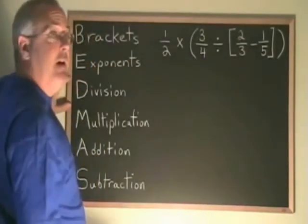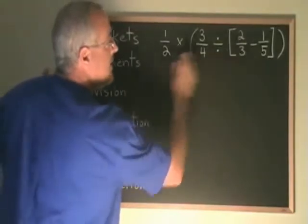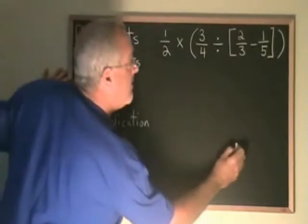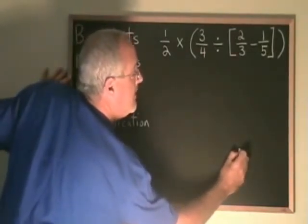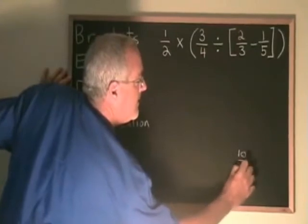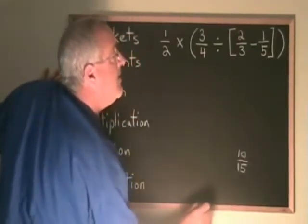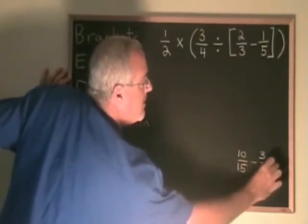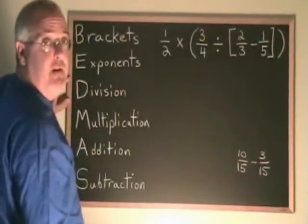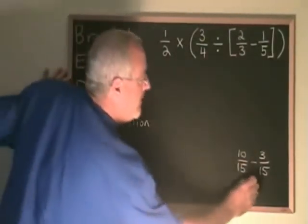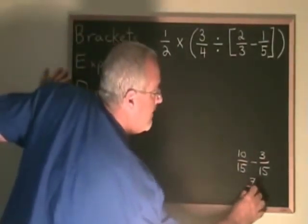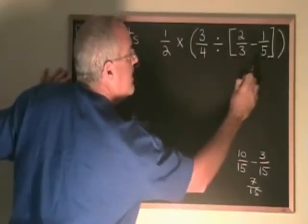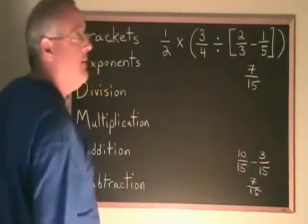2 thirds minus 1 fifth is hard to do while showing your work in the middle of a BEDMAS problem, so I like to do it off to the side. 2 thirds is equivalent to 10 fifteenths, and 1 fifth is equivalent to 3 fifteenths. The common denominator of 3 and 5 is 15. 10 fifteenths minus 3 fifteenths is 7 fifteenths. So I'm writing the answer to the subtraction, 7 fifteenths, right here in the place of the small bracket.